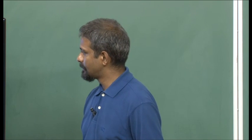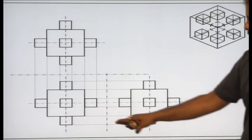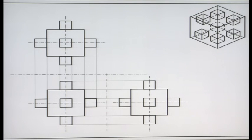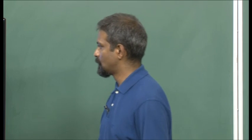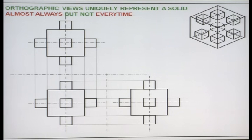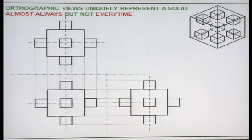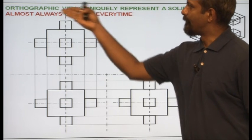Where are my projection lines? They have to be there. The final lines are thick solid lines, whereas the construction lines are gray lines. Just for reference, it is always a nice idea to have projection lines, because otherwise things become very difficult to comprehend. Orthographic views uniquely represent solids almost always, but not every time. For instance, it is not possible to represent the internal void here, so be careful about that, but almost always these views work.